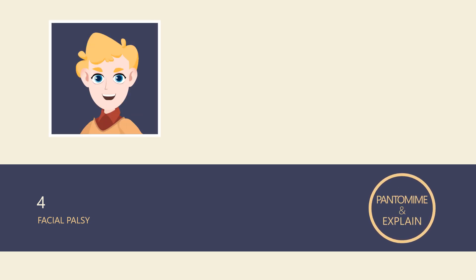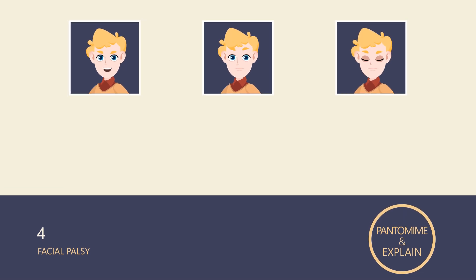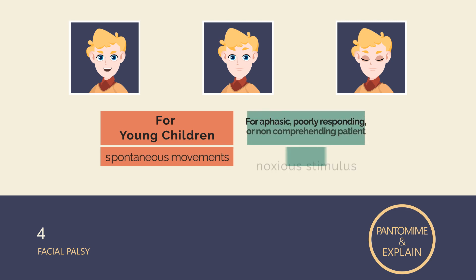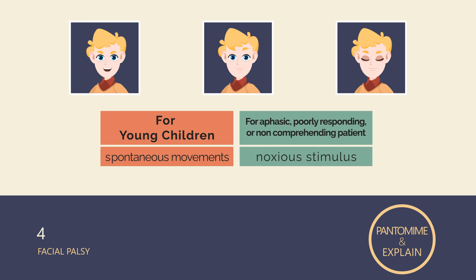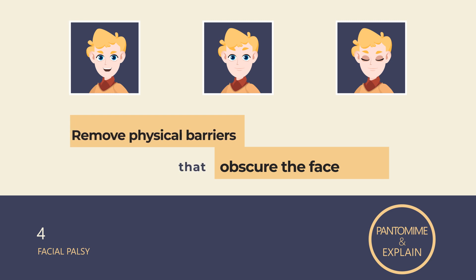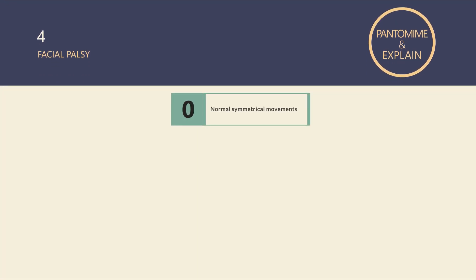Item 4, Facial Palsy, assesses facial weakness. To assess this item, pantomime and verbally request: show me your teeth, raise your eyebrows, and squeeze your eyes as hard as you can. In young children, spontaneous facial movements should be assessed. Score symmetry of grimace in response to noxious stimuli in the poorly responsive or non-comprehending patient. Everything that obscures the face, for example tapes or bandages, should be removed if safe and feasible before assessment.